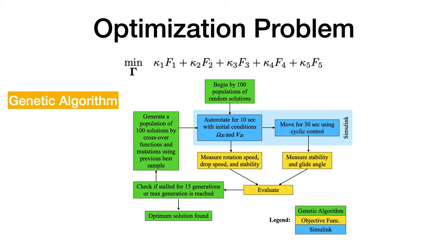Various data are extracted from the simulations to measure and evaluate flight performance, such as rotation speed, drop speed, and glide angle. The best solution is selected and generated into another 100 samples using mutation functions. This process is repeated until it is stalled for 15 generations or a max generation count is reached.